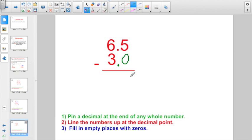and five minus zero is five. Bring the decimal point straight down into the answer, and six minus three is three. For a final answer of 3.5.